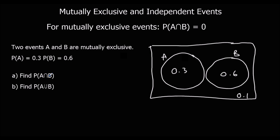So the probability of A and B — well, they can't happen at the same time, so it's 0. And the union — it's just the two added up, so 0.9.